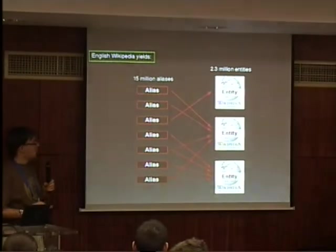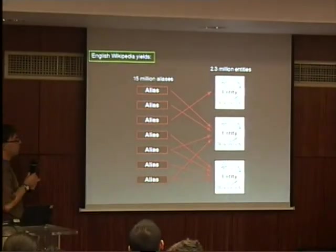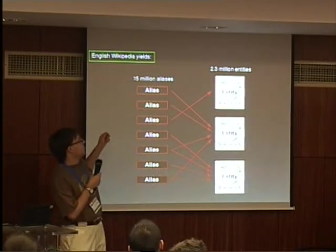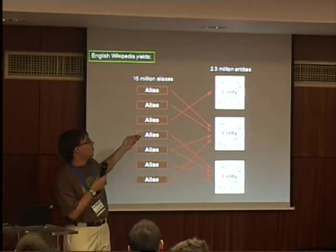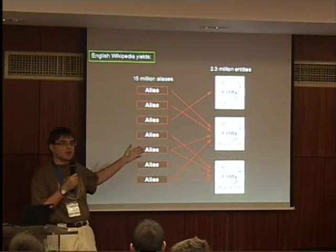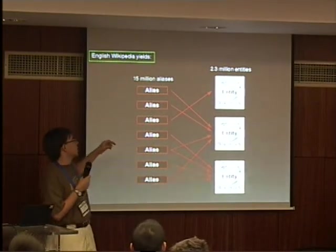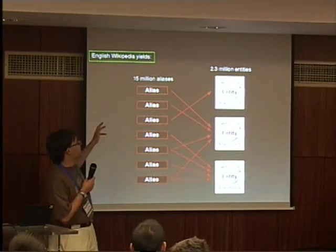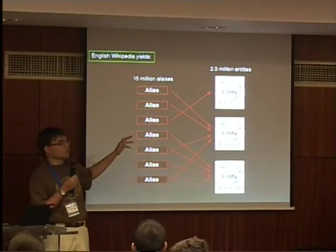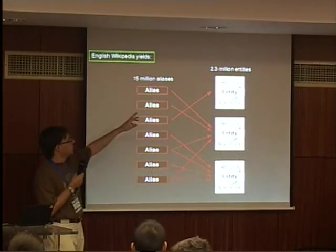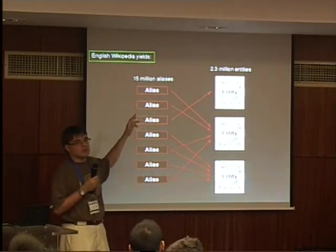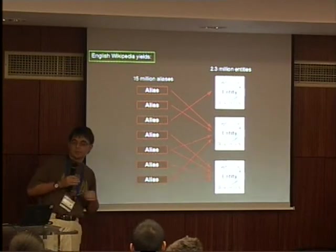Just to give you an example of the numbers we're talking about here: the English Wikipedia gives us approximately 2.3 million entities and around 15 million aliases that link to them — a little bit more than the 2.4 million pages that the current English Wikipedia has.